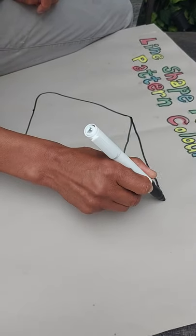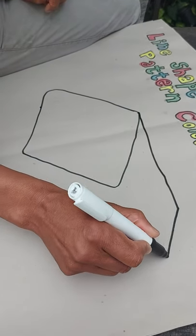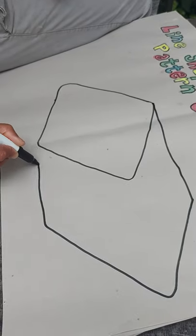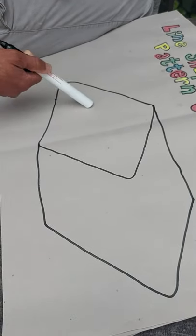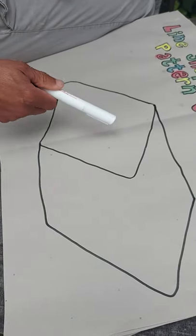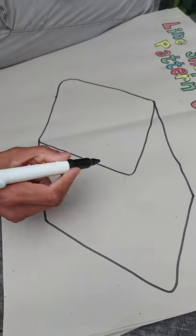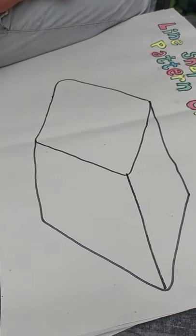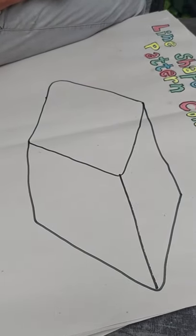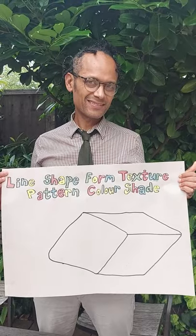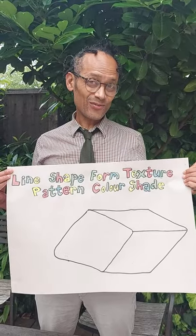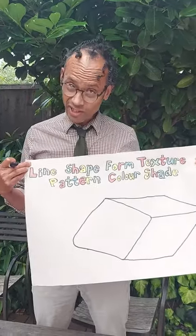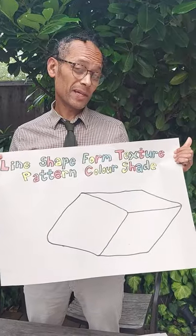I'm going to try and make it look like a form. Form is where a shape becomes three-dimensional. So you can see there's the shape and there's the side of the shape as well — this is what we call a form. So far we've got line, we've turned it into a shape, and that shape has become a form.